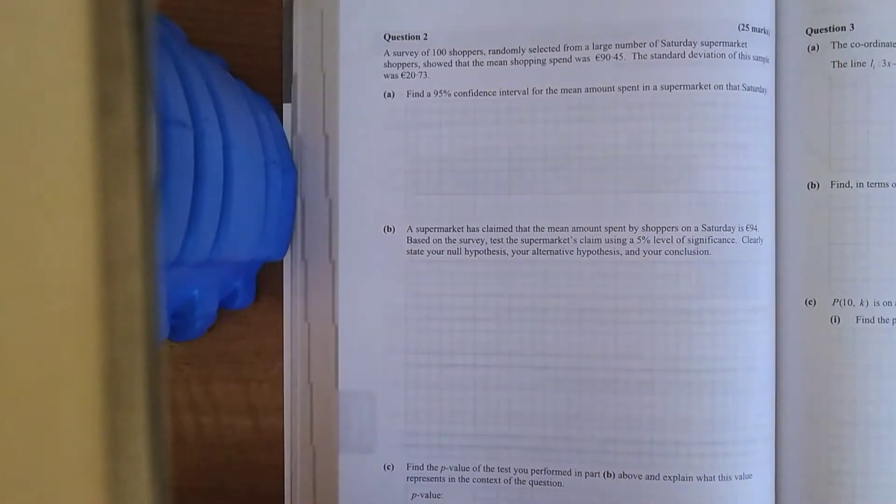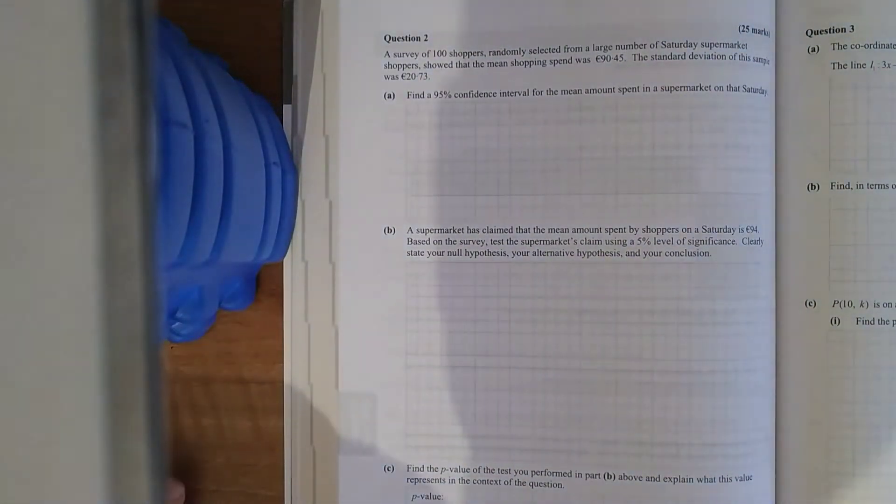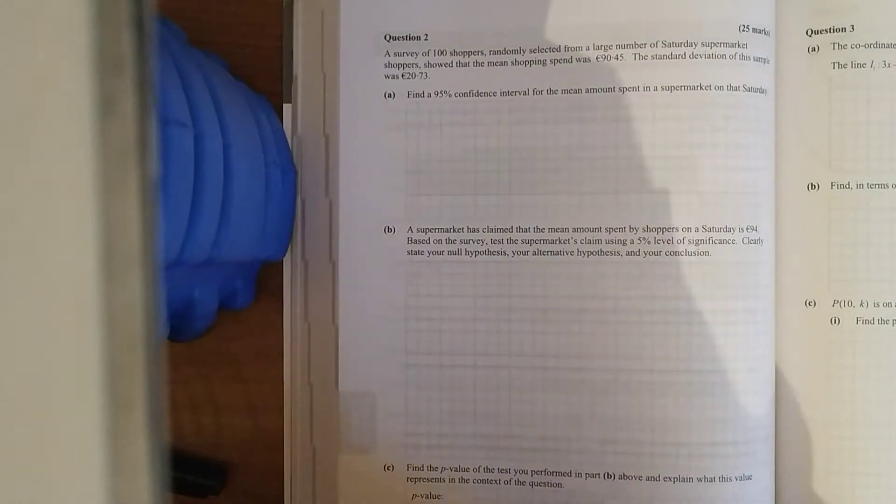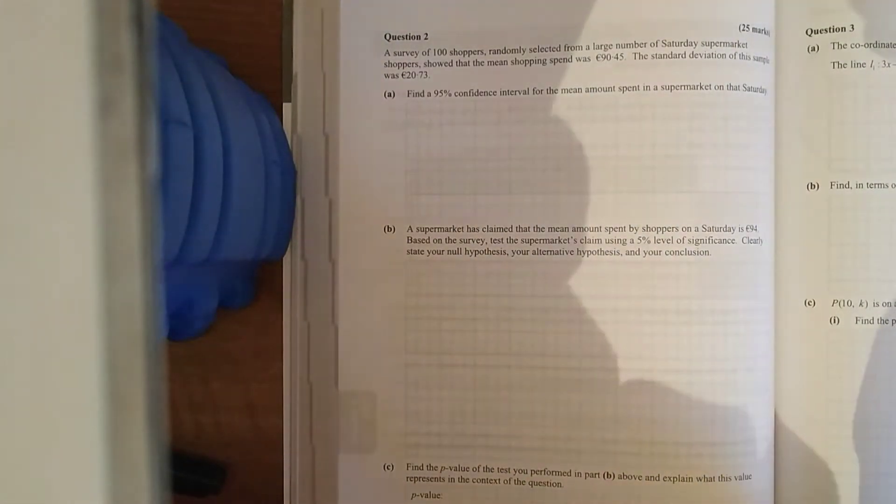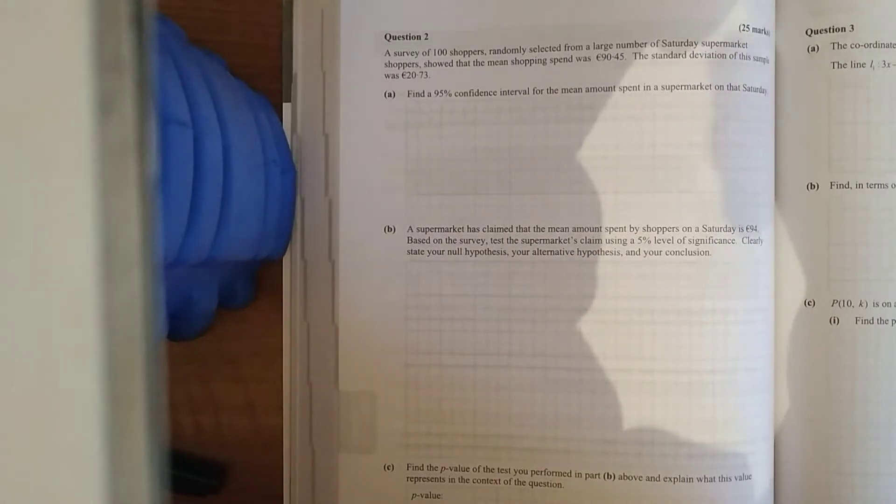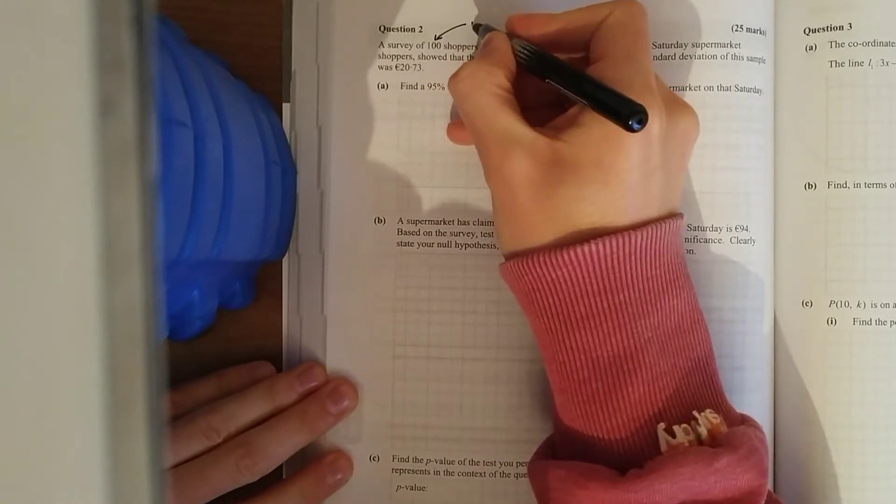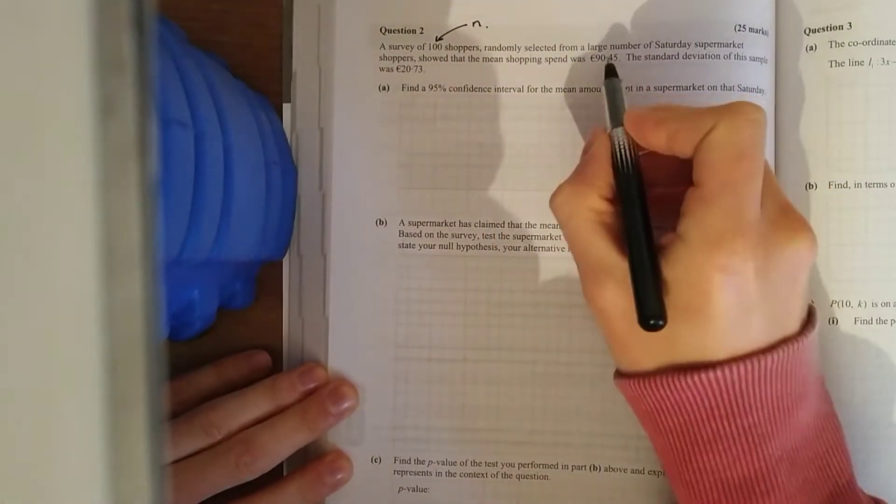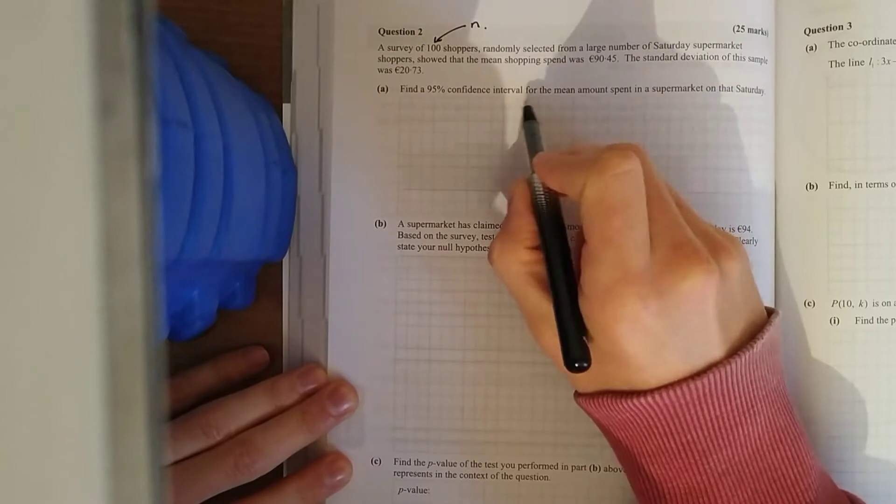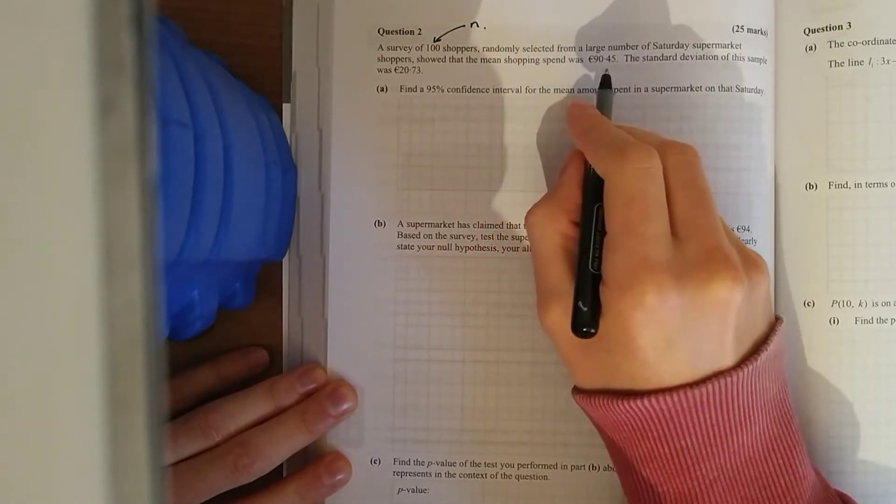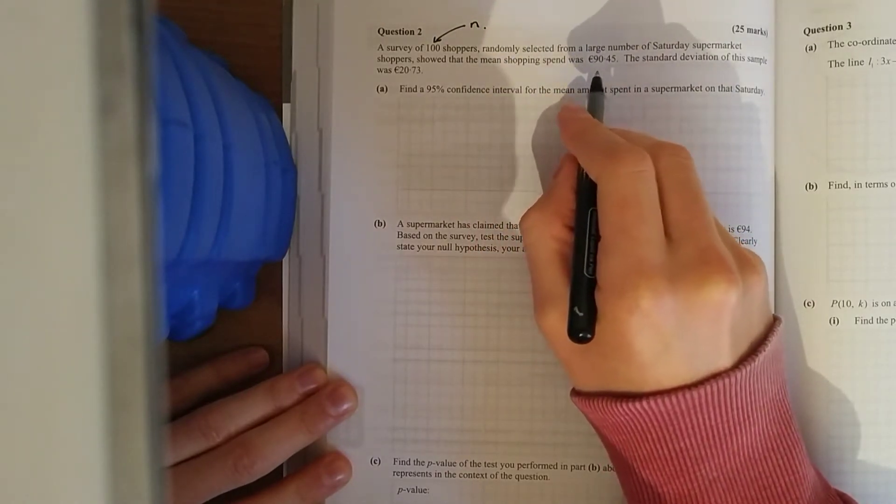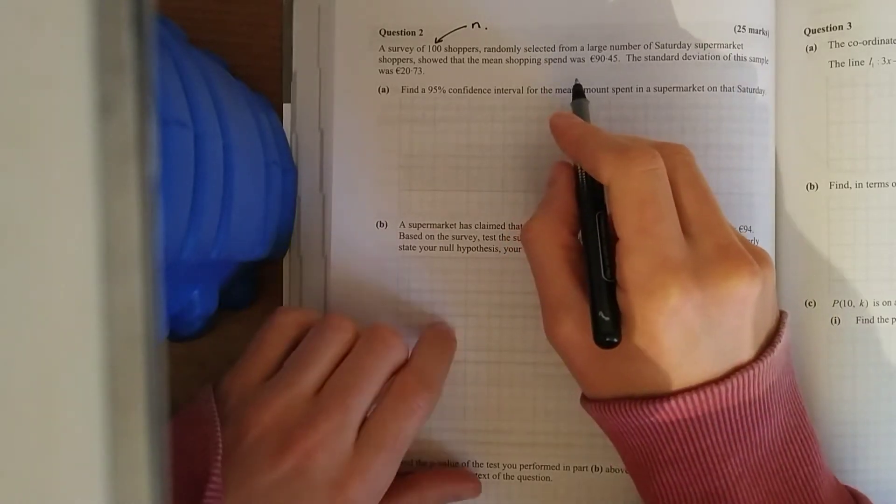Right, a stats question here from 2015. Question 2, we're looking at confidence intervals. So the key thing in these ones is to label all information that they give you. Have your formula book open on pages 35, 36, the pages prior to the Z scores and there's only a few formulas that you need to know. So a survey of 100 shoppers, that's the number of shoppers N, selected from a large sample of Saturday supermarket shoppers showed that the mean shopping spend was 90.45 and the standard deviation was that.